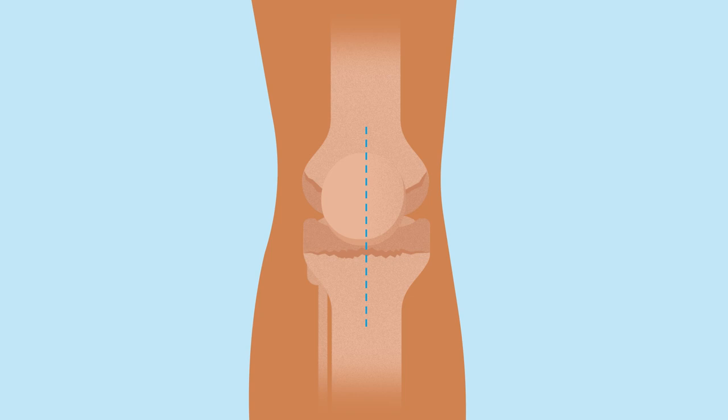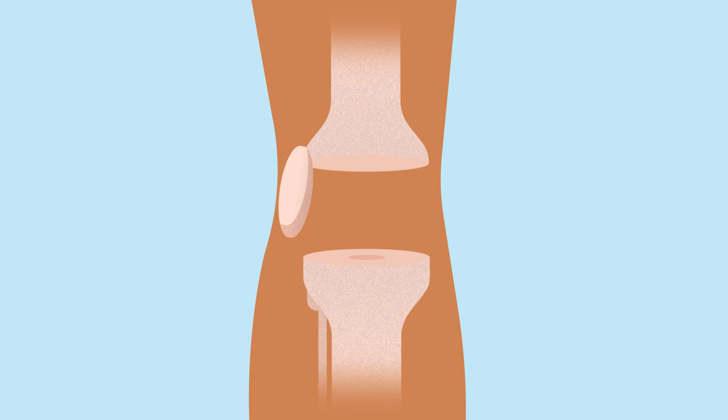Your surgeon will make a cut down the front of your knee, then move your kneecap to one side to get to the joint.